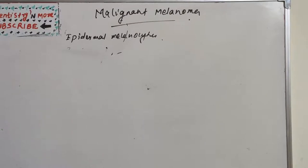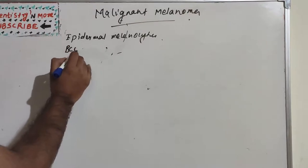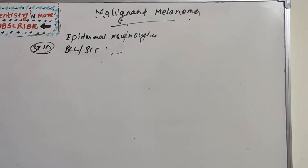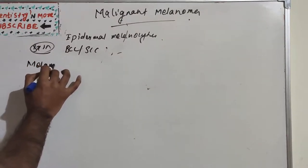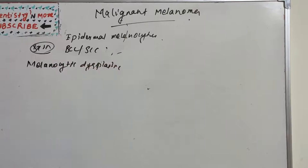Malignant melanoma is the third most common cancer of skin, after basal cell carcinoma and squamous cell carcinoma. Earlier it was believed that melanomas develop in nevi, especially junctional nevi, but now it is thought that those lesions were in fact pre-malignant melanocytic dysplasia.